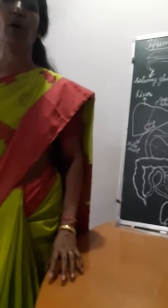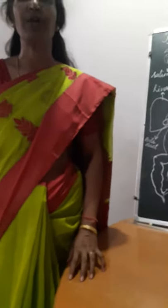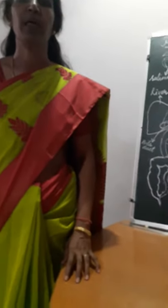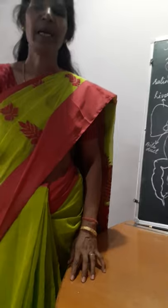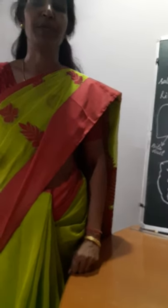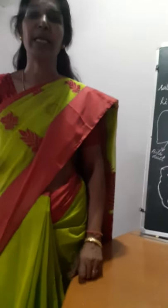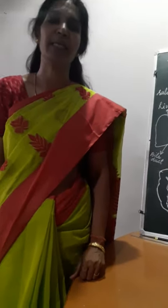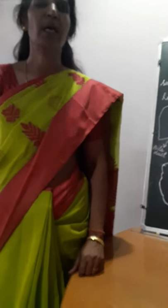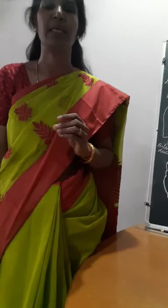In the previous class, you have learnt about heterotrophic nutrition. In heterotrophic nutrition, there are three types you have learnt already. One is holozoic, number two, saprotrophic, and the third one is parasitic.